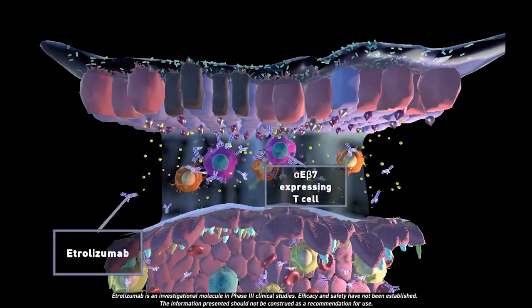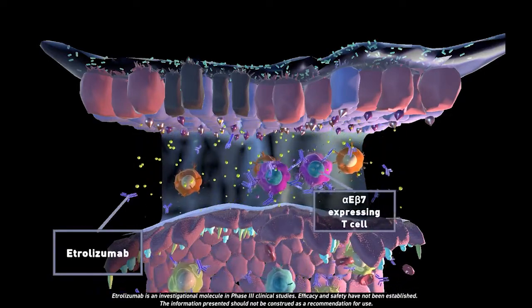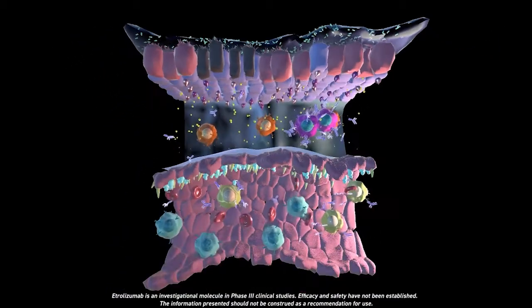Thus, it is hypothesized that the blocking of alpha-E-beta-7 receptors by etrelizumab allows the cells to egress out of the gut and to the lymph nodes and may prevent damage.